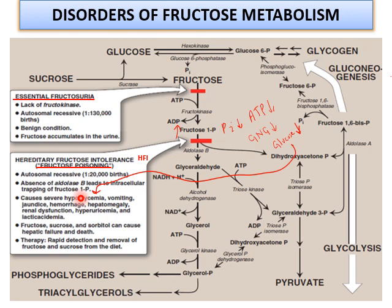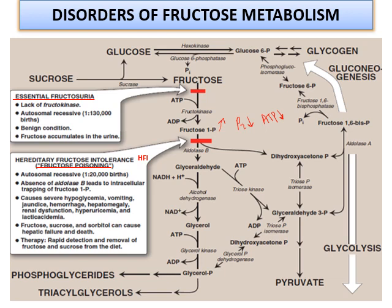Vomiting is a symptom associated with hypoglycemia. The deficiency of aldolase B results in high levels of fructose 1-phosphate, leading to low inorganic phosphate and decreased ATP. This low availability of ATP in the liver may also affect protein synthesis — for example, it may result in decreased production of clotting factor proteins, thereby increasing the risk of hemorrhage or bleeding.